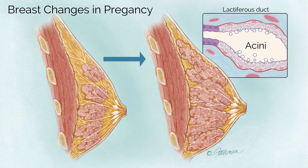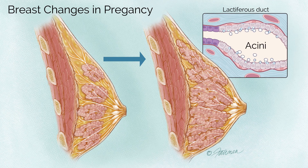Final maturation past this state only takes place with pregnancy. In pregnancy, progesterone differentiation continues to the point where the breast is mostly glandular. Secretory units called acini fully differentiate. These changes begin in pregnancy and continue until lactation is complete.